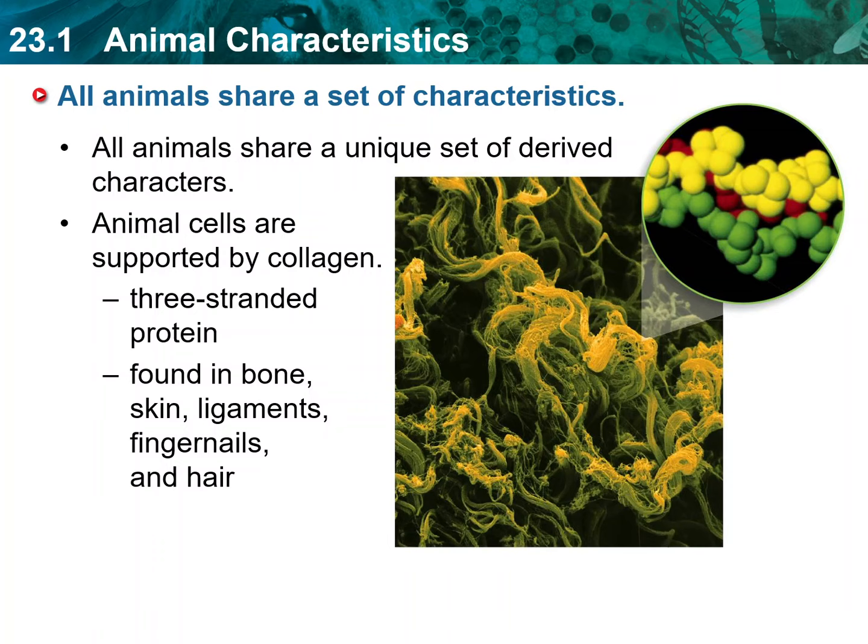Animals are not the only eukaryotes that are both heterotrophic and multicellular. Fungi are also multicellular and use organisms for food. But cells of fungi do not have the same diversity of functions that animal cells have. Although animals and fungi share heterotrophic ancestors, it is likely that they evolved the trait of multicellularity independently.